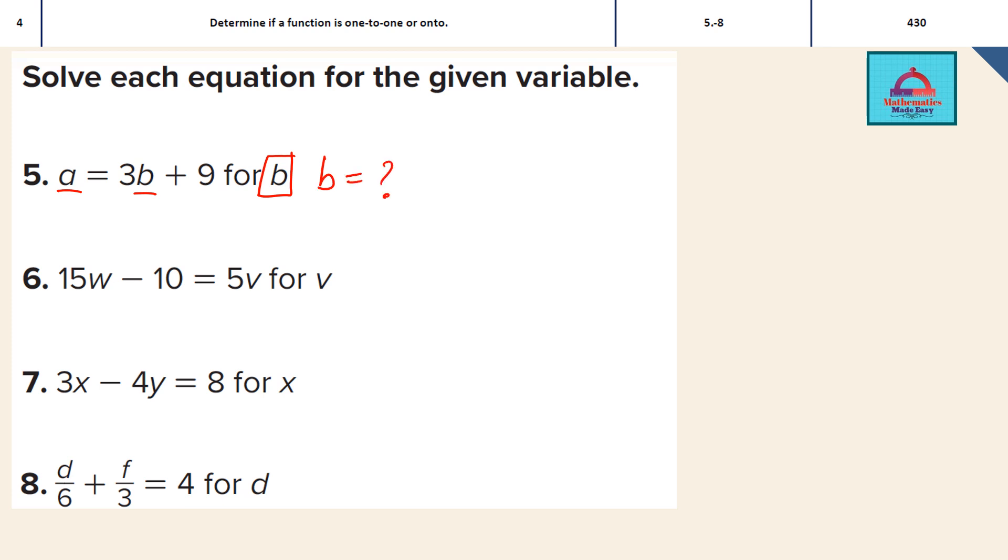Now the rule that we are going to use for solving all these questions is very simple. We are going to isolate or keep alone the variable that we are solving the equation for. That means if I am solving question 5, equation A equal to 3B plus 9 for variable B,